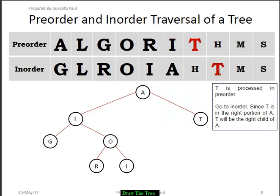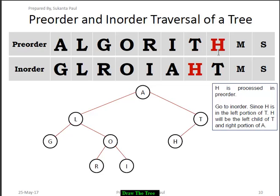We proceed to the next node in pre-order, which is T. In in-order, T is present on the right side of A, so T will be the immediate right child of A. Then we proceed to the next node in pre-order, which is H. In in-order, H is present on the right side of T, so H will be the left child of T.